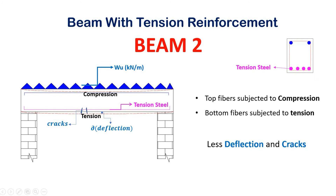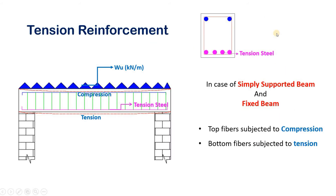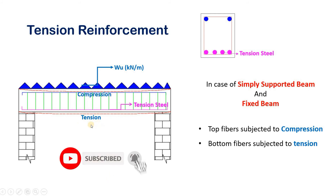The steel reinforcement takes the tensile load, which in turn reduces cracks in the beam and also reduces deflection. To balance the beam under tensile and compressive loads, steel is provided on the tension side. In the case of simply supported beams and fixed beams, the tension steel or main reinforcement is provided at the bottom of the beam section, because when load is applied, the top fiber is under compression and the bottom fiber is under tension.